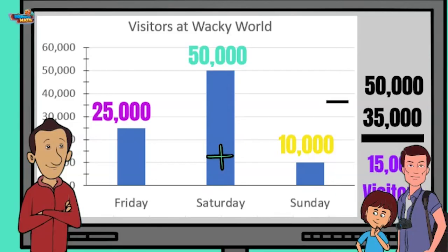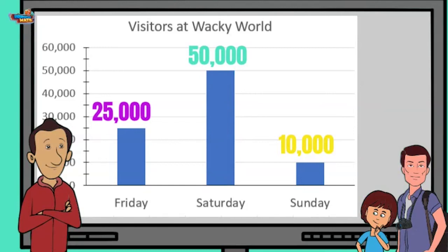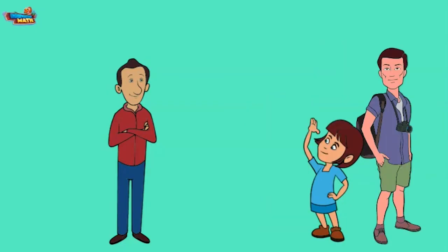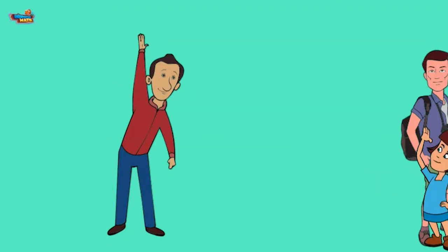Man, you are good at this! Next time we are staying back at the hotel pool on Saturday to avoid those wacky crowds. Sounds like a good plan! Looking at the graph, Saturday had about five times the amount of visitors as Sunday. I found this by dividing the Saturday visitors by the Sunday visitors. So much information can be found from a bar graph! Thanks again! Thanks for stopping in — Data's R Us hopes to see you again!